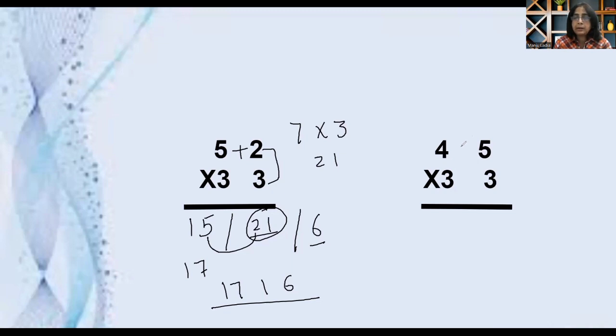Now again another example. 4 into 3, 12, write it here 12. 5 into 3, 15, write it here 15. Leave this middle place, then add these two numbers, 4 plus 5, 9, and 9 into 3 because it is 33, so 9 into 3, 27, write it here 27.